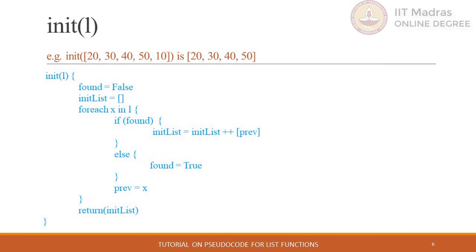If variable x has the second element of the original list, then we will be adding the first element to the init list, which is stored in variable prev. The same process of adding an element will continue for all elements of the original list except the last, because we will add the second-to-last element of the original list to the init list when variable x has the last element. Similar to the rest function, if we pass an empty list or a list of length 1, the for-each block will not execute and the function will return an empty list.